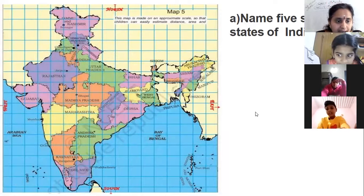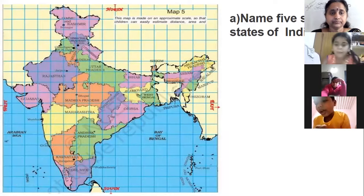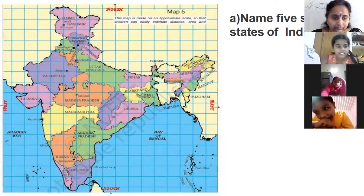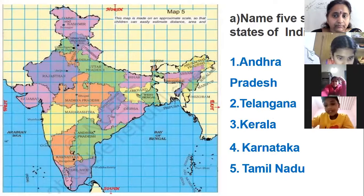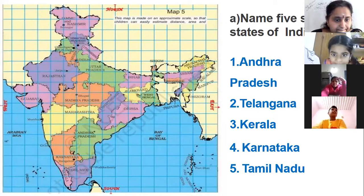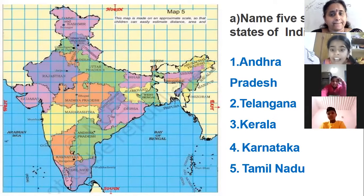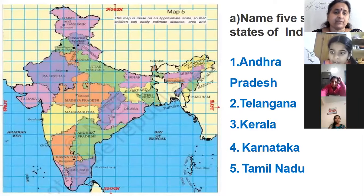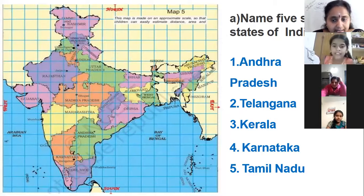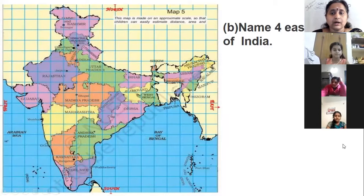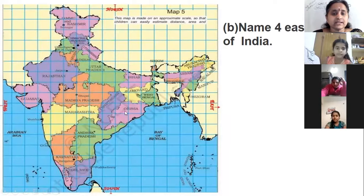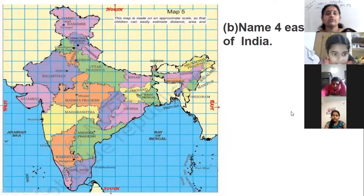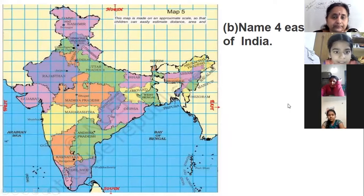Now, Bradwalhari, can I say — yeah, tell me. Now name four eastern states of India. Here, this is the east. Tell me four eastern states of India.